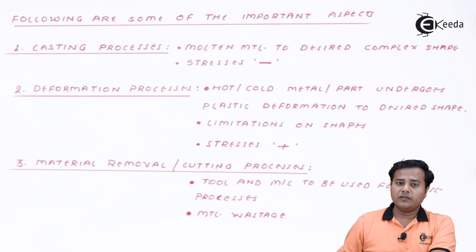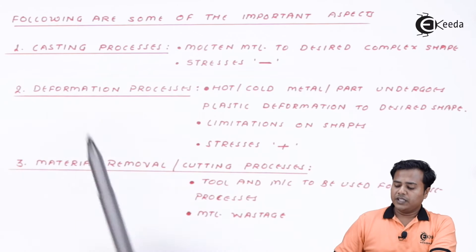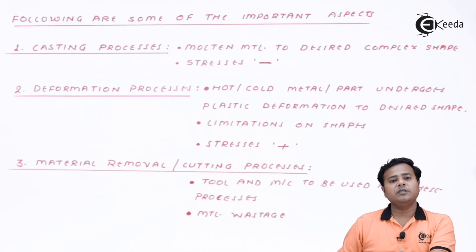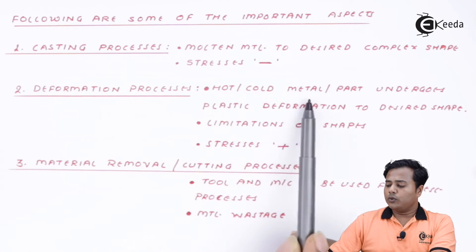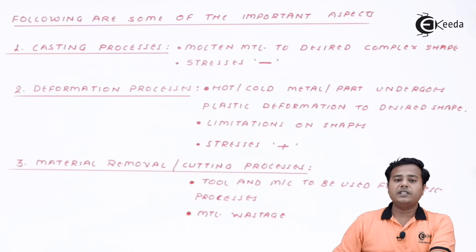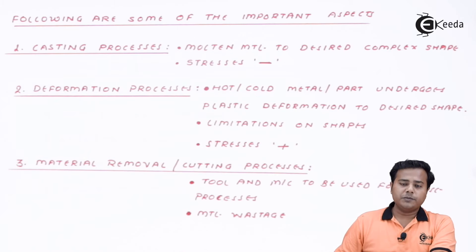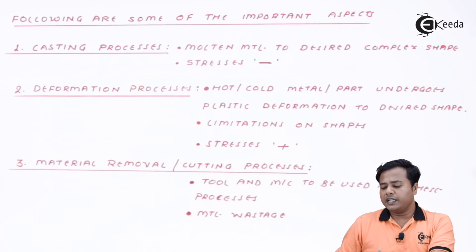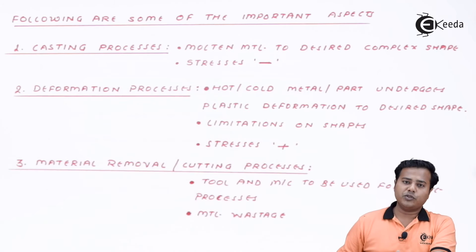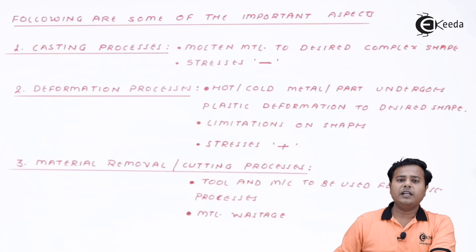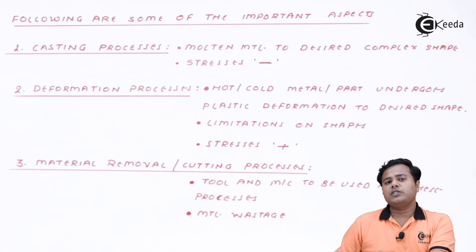Casting procedure should be decided before the actual machining starts. The second aspect is deformation processes, where hot or cold material undergoes plastic deformation to desired shapes — it can be rolling, stamping, forging, or similar. Deformation procedures are conveniently used for simple shapes. The disadvantage is there is a limitation on the shapes that can be created compared to casting. The advantage is that stresses are quite balanced and can be managed through hardening procedures or heat treatments.